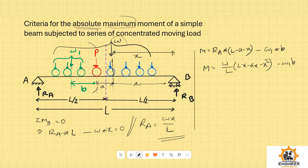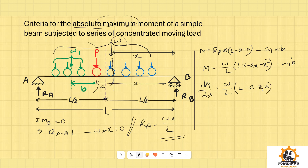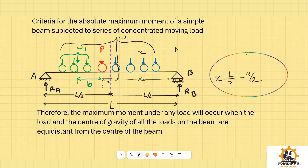We will take the maximum moment. We will differentiate this equation and set it equal to zero as the condition for maximum moment. So dm/dx is equal to W into (L minus A minus 2x) divided by L, set equal to zero. This means L minus A minus 2x equals zero, which gives L minus 2 times (A/2). Therefore, x is equal to L/2 minus A/2.